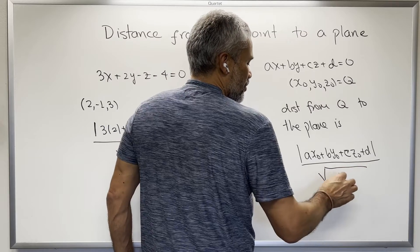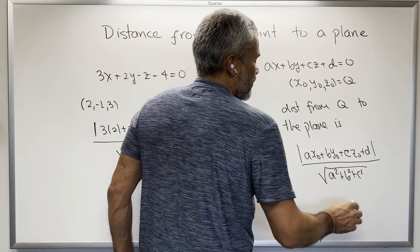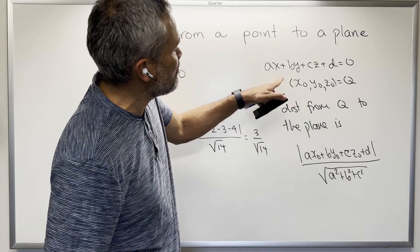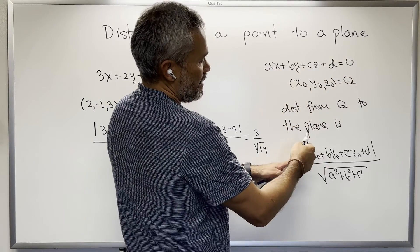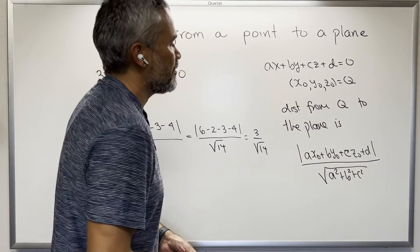Over the square root of a squared, plus b squared, plus c squared. This is the distance. Notice that if the point happens to be in the plane, then when you replace it here, you get 0, and that means that the distance is going to be 0, because this numerator is going to be 0.